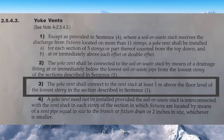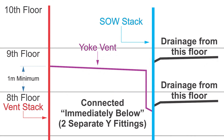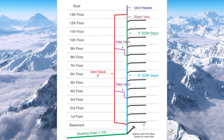Clause 2543 Part 3: The Yolk Vent shall connect to the Vent Stack at least one meter above the floor level of the lowest story in the section described in sentence one. In this picture, the Yolk Vent comes up, across — running inside a wall — and connects into the Vent Stack. Notice how it is a minimum of one meter above that floor level when it connects into the Vent Stack.